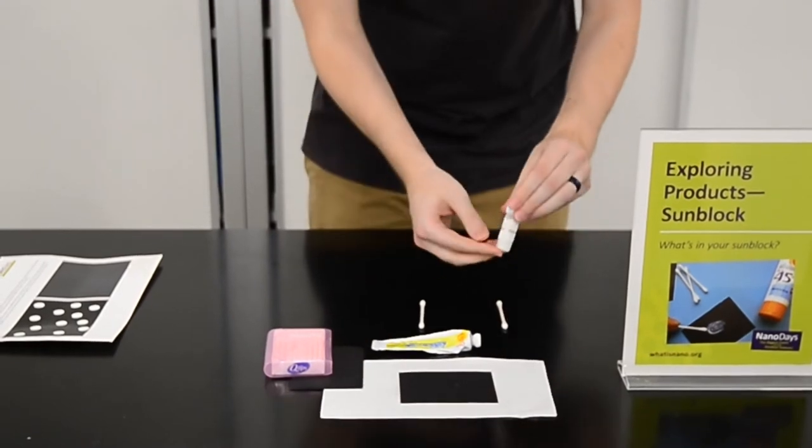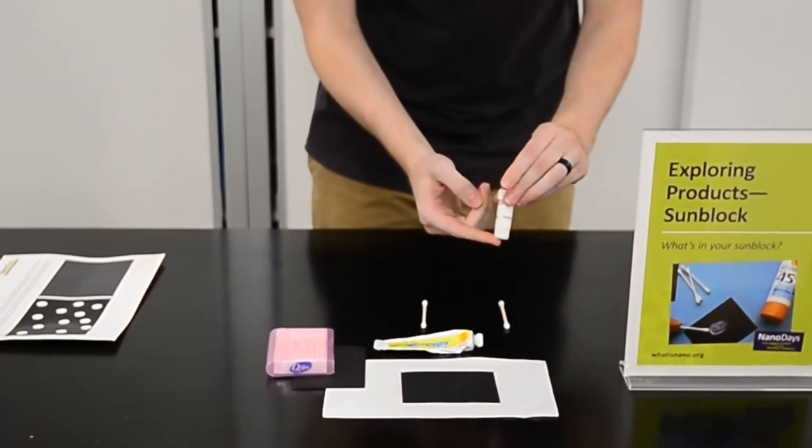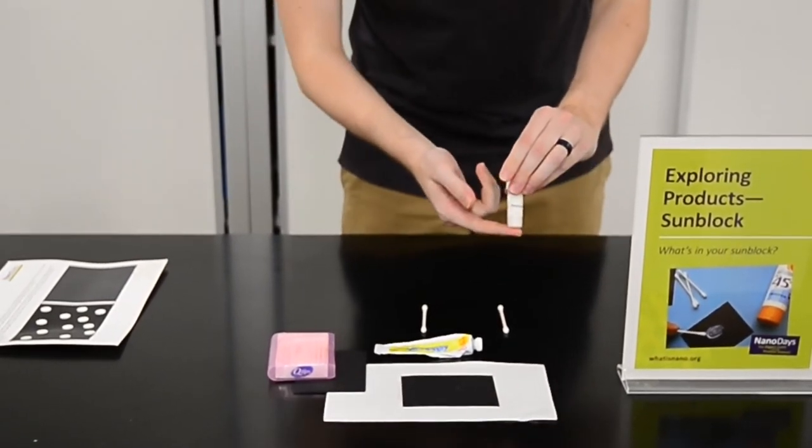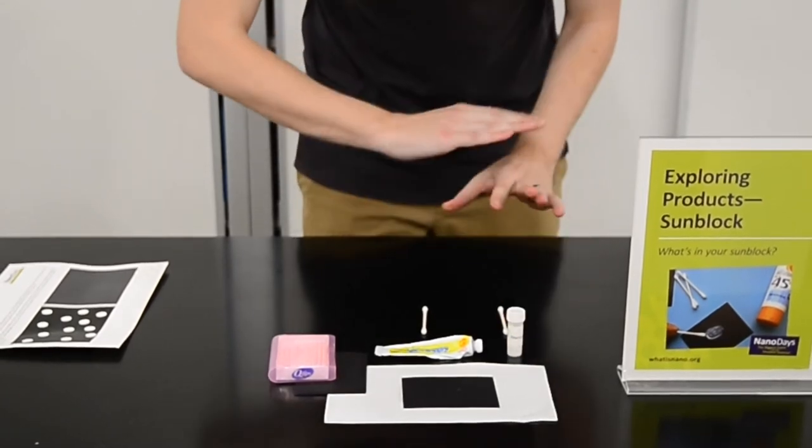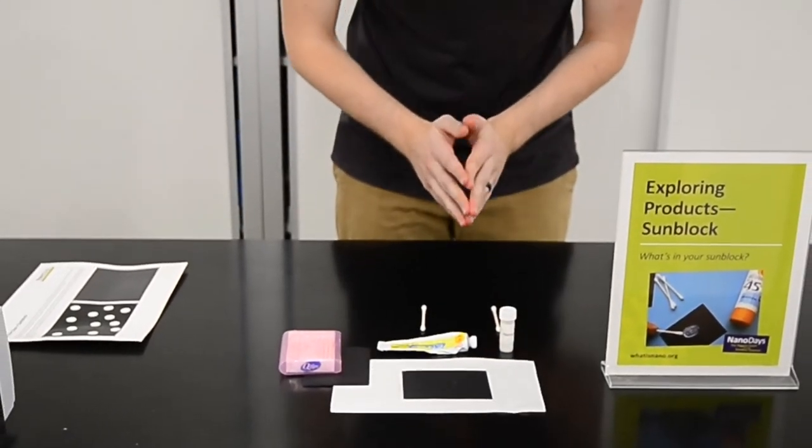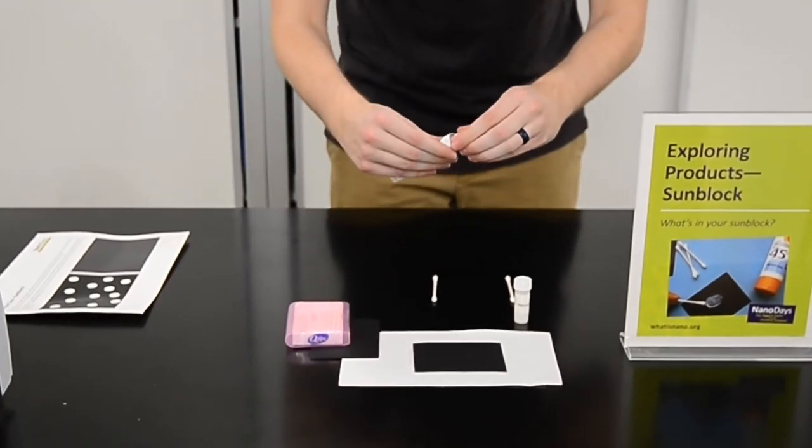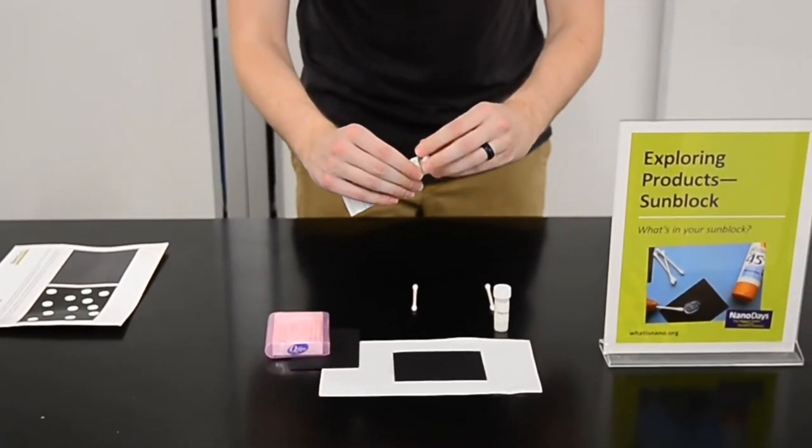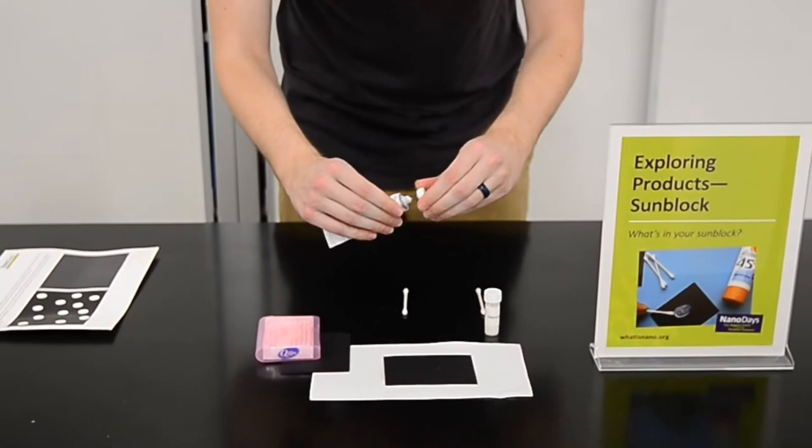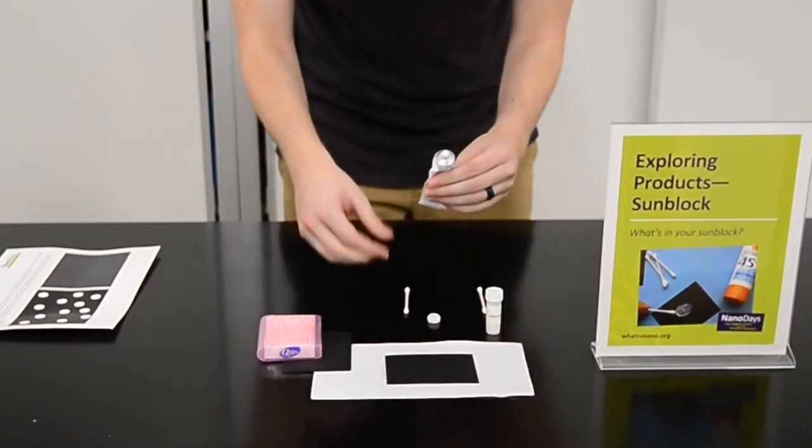And also nanoparticle sunblock, which might also be known as clear sunblock or clear coating sunblock. And so what we're going to do, this is a very simple experiment, is we're going to just put a little bit on this q-tip, a little bit of each ointment on this q-tip, and try and apply it to the dark construction paper.